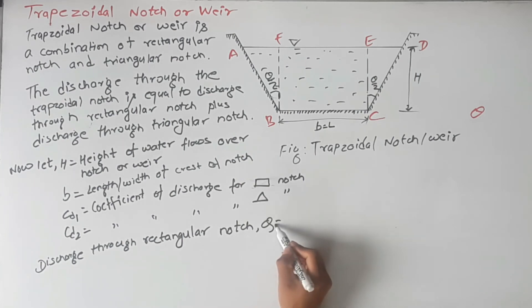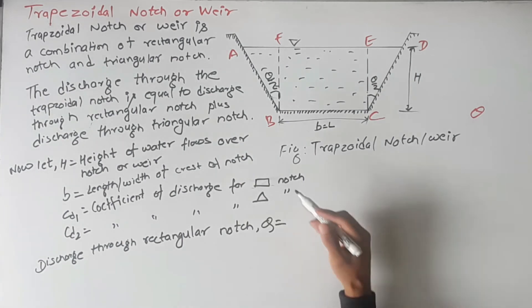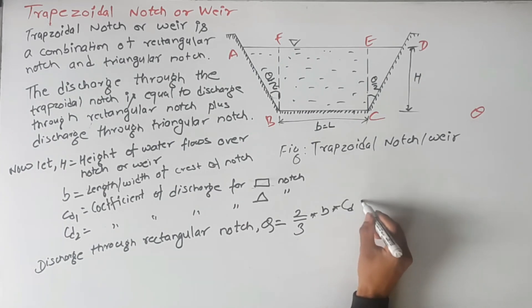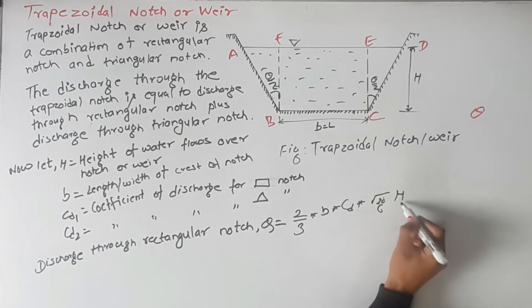Let this be Q1. We know the discharge through rectangular notch is 2/3 into width into discharge coefficient into root under 2g into h to the power 3/2.